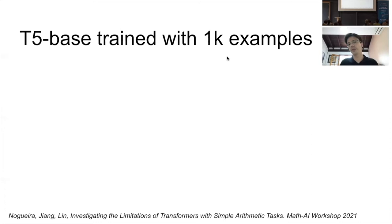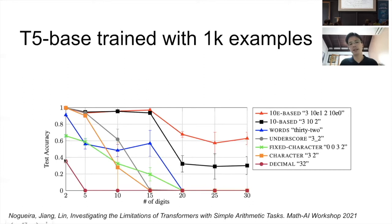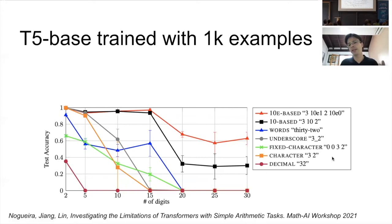We took a T5 base model trained with 1,000 examples on this task. In the red curve, the model output uses subword representation — no special treatment for numbers, just the standard pre-trained tokenization — which we call decimal representation. The model completely fails to learn five-digit addition. If we apply the trick of separating digits with spaces — character-level representation, shown in the orange curve — the model performs better but still fails around ten digits.